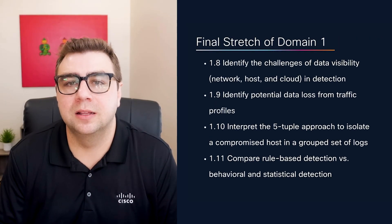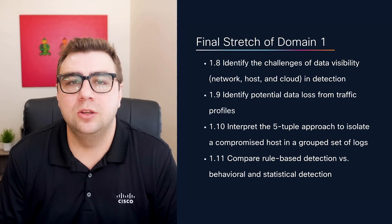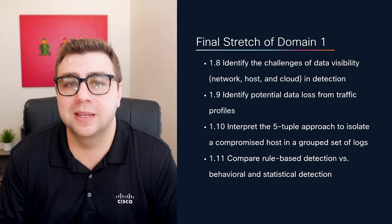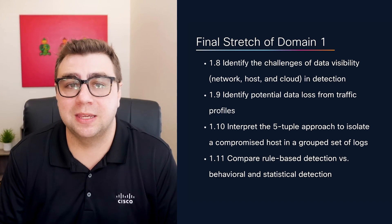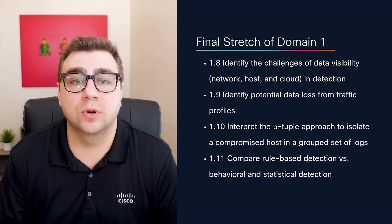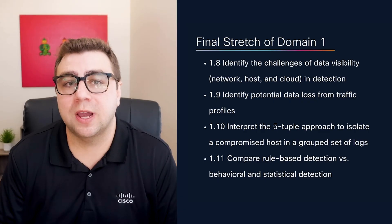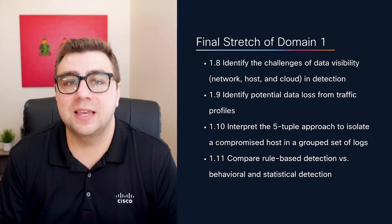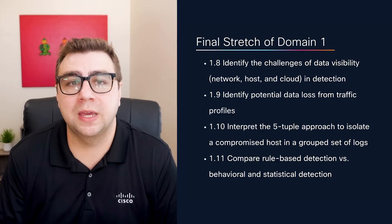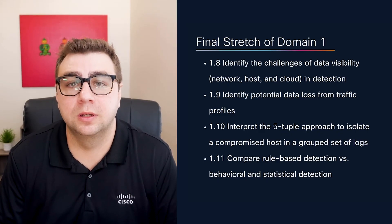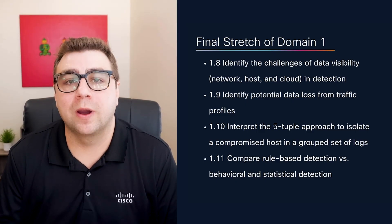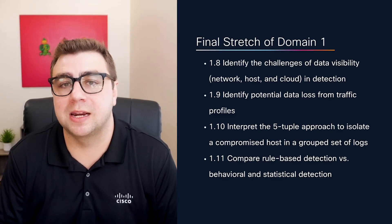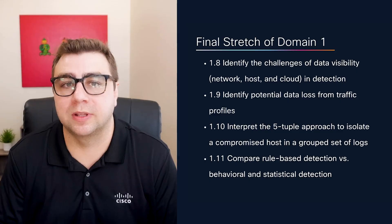The final stretch of this domain looks at data visibility and detection. You'll want to understand why it's difficult to get full visibility across network, host, and cloud environments, and how that affects detection. There's also a section on using the five-tuple — source IP, destination IP, source port, destination port, and protocol — to identify suspicious traffic and group log data. And finally, the exam might ask you to compare detection types: rule-based, behavioral, or statistical. Rule-based detections use signatures — things we already know — whereas behavioral and statistical detections rely on patterns and anomalies, which are key as we move towards more AI-driven threat detection.